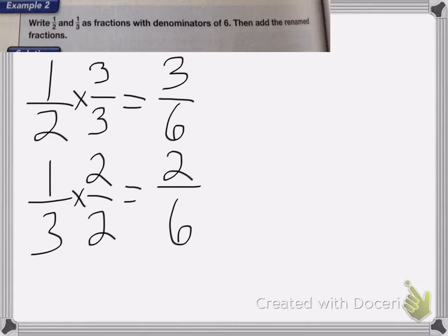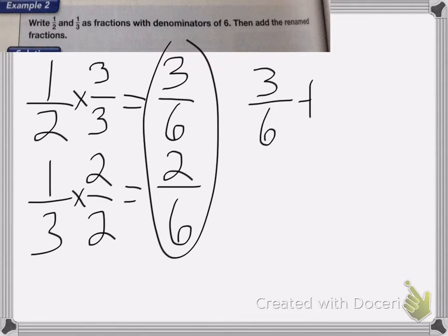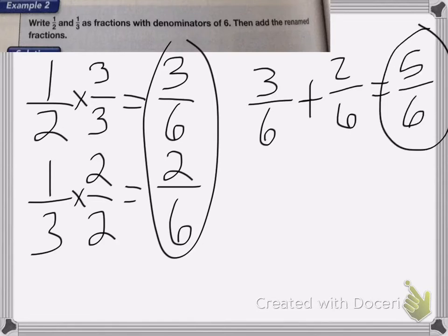Now it wants me to add these two new numbers together. So we have 3/6 plus 2/6 is equal to 5/6, and that will be the correct answer for this problem.